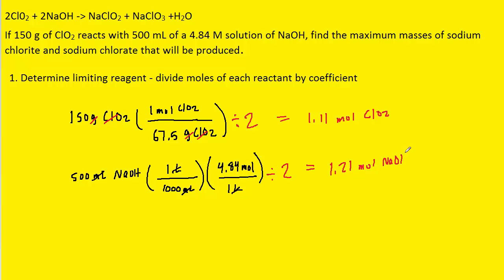The trick here is to pick the reactant that had the fewest number of moles in this calculation. We can see that that turns out to be the chlorine dioxide. Therefore, that is the limiting reagent, and we can move on to step two.